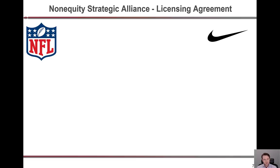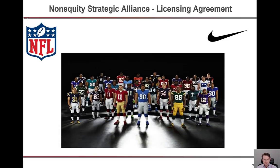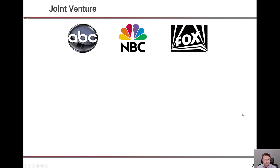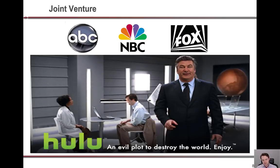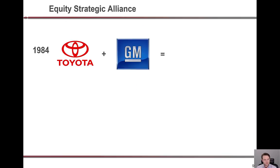An example of a non-equity strategic alliance would be a licensing agreement between the NFL and Nike, simply giving Nike the license to make official NFL uniforms. A joint venture example is ABC, NBC, and Fox coming together to create Hulu, where they each own a third of it, setting out to create their own streaming platform to compete with Netflix.